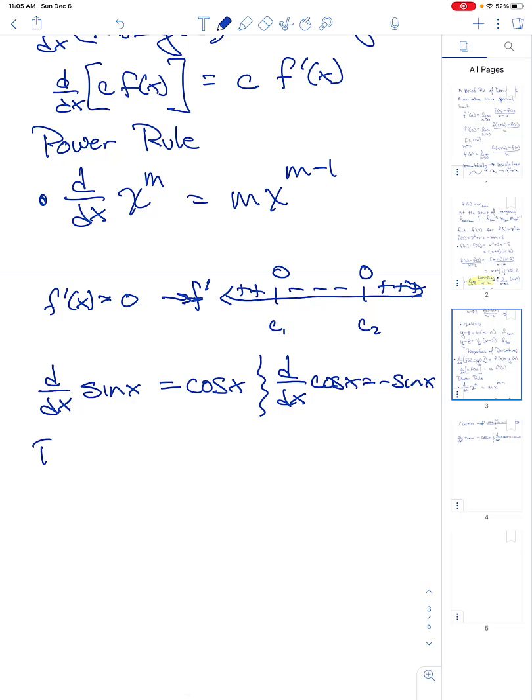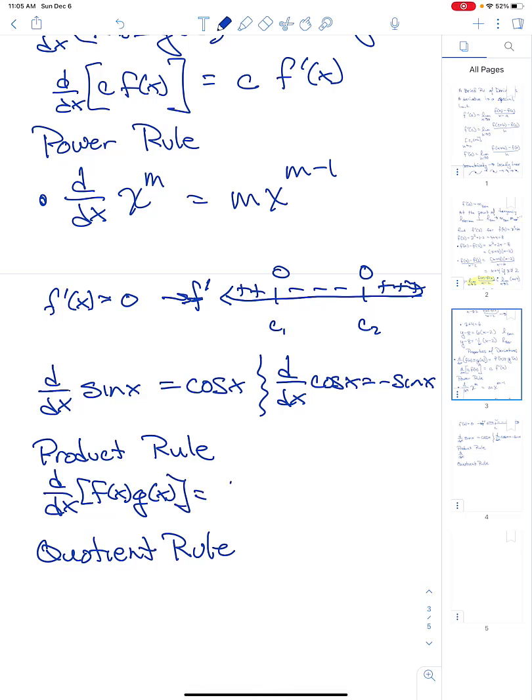Okay, then we had the product rule and we had the quotient rule. So the product rule says if f and g are differentiable, if you take the derivative of the product of two differentiable functions, it's the sum of the derivative of the first times the second and the first function times the derivative of the second.